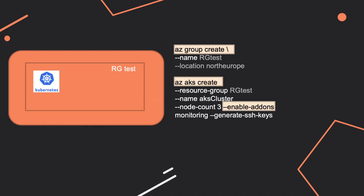You can also be asked to deploy an AKS cluster. For that, you have to make sure your resource group is already created, then you can deploy your Kubernetes cluster. The two main CLI commands to know are 'az group create' for the resource group, and 'az aks create' for Azure Kubernetes Services. A third one is 'enable-addons,' which is used to enable Azure monitoring on your clusters. I don't expect many complex questions on Kubernetes in the exam.